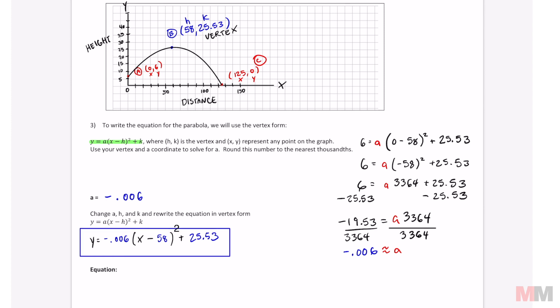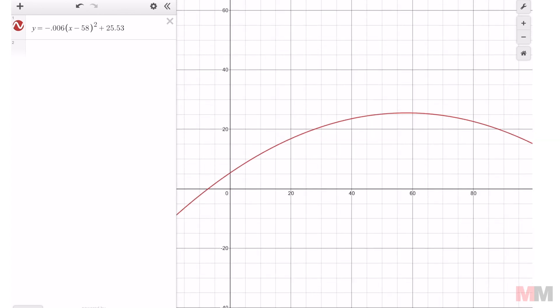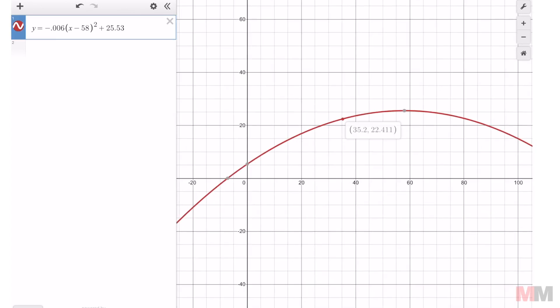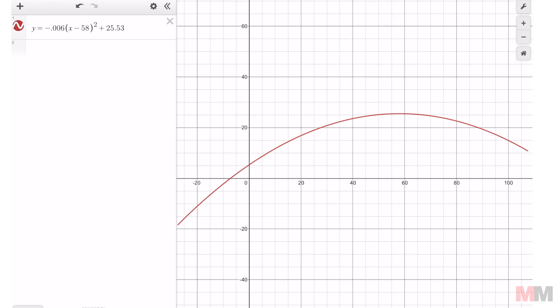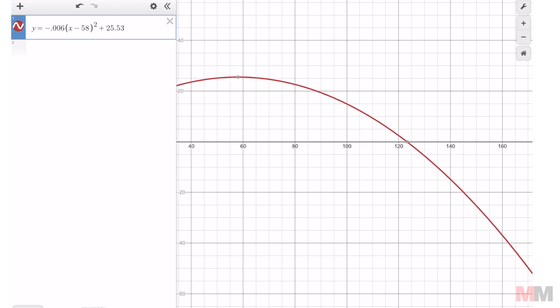Check it out. So if I want to make sure that this is the correct path of my football, my favorite website in the world to check graphs: go to desmos.com, hit graphing calculator, and type the same equation. So if you look, it's not going to be perfect because we rounded our numbers. But in the beginning it was thrown at about 6 feet, which checks out. The highest part of my football throw was 25.53 at a distance of 58. So that checks out. And it lands all the way at 125 feet. Here we got 123 feet. It's not going to be perfect because we rounded our numbers, but that's pretty close, right?